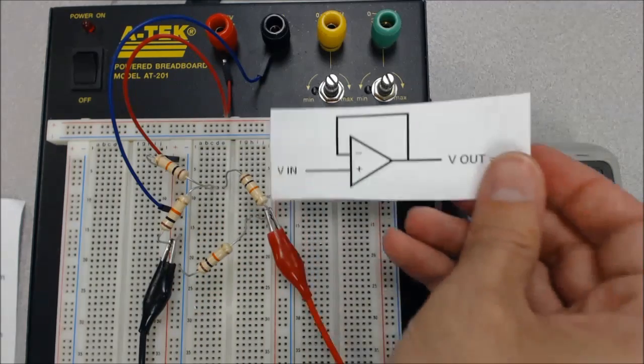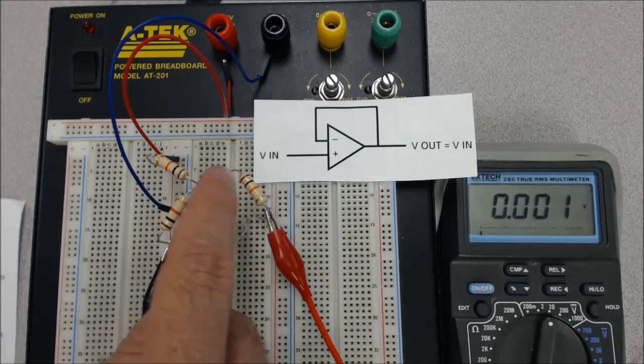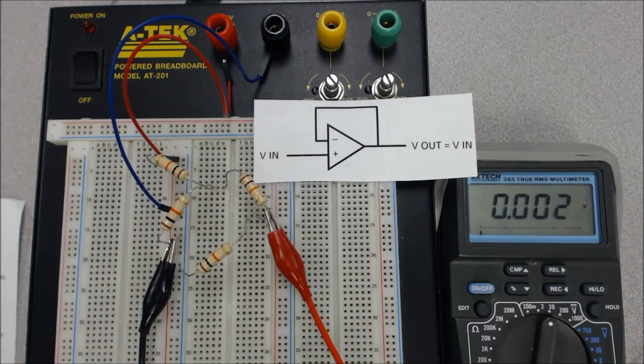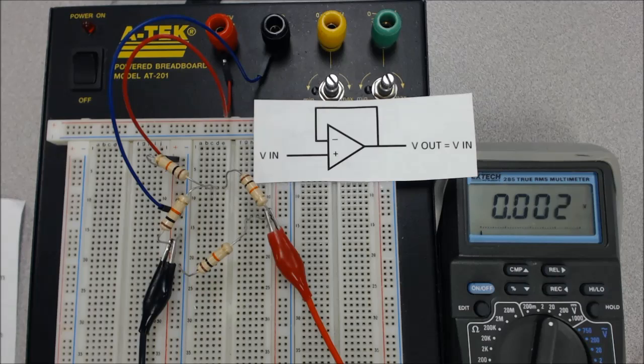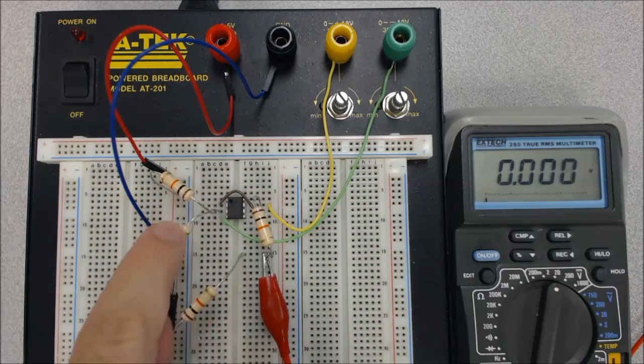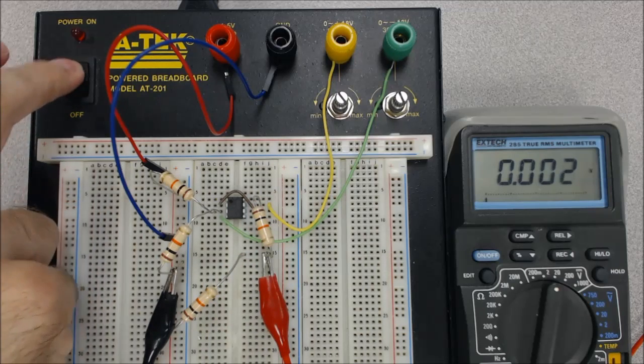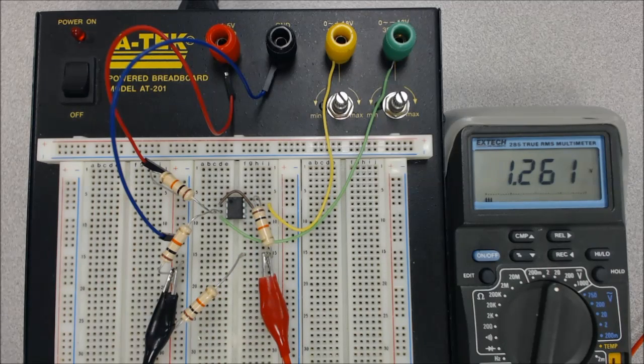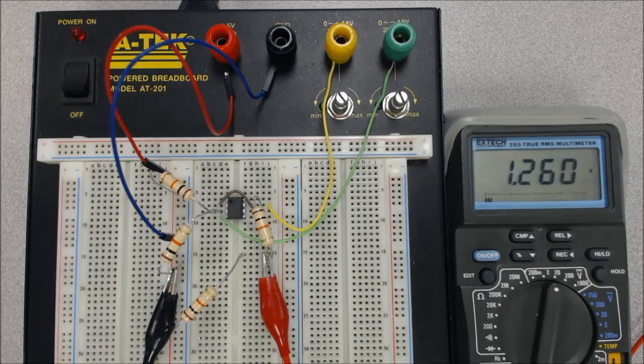So now what I want to show you is what will happen if we put this impedance buffer in between these two voltage dividers. And what we'll see is it will fix this problem that we just observed. Now we have our completed circuit with the impedance buffer and the two voltage dividers. And what we find out is when we turn on the breadboard we get roughly the 1.25 volts that we were expecting.